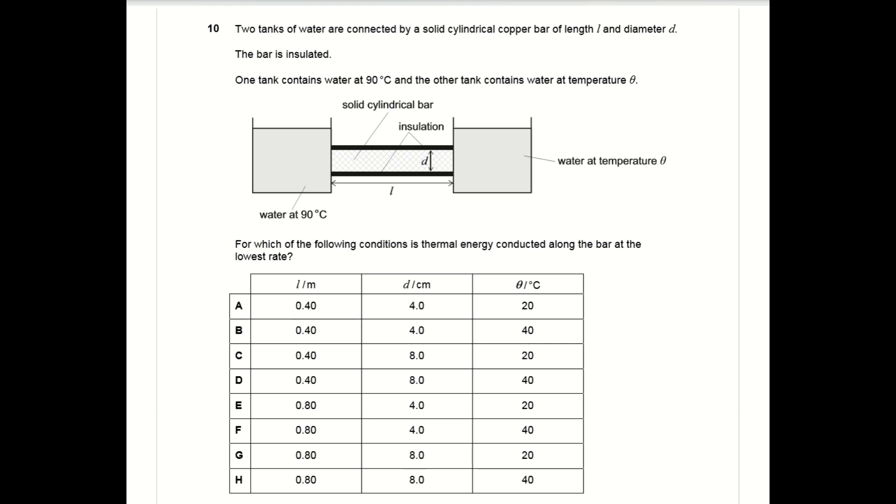Question 10 is pretty much intuition. For thermal energy to be conducted along the bar at the lowest rate, you want to maximize your distance between the beakers L, you want to reduce the diameter d over which thermal energy is transferred, and you also want to minimize your difference in temperature between the two beakers.